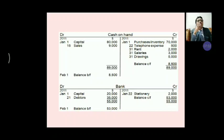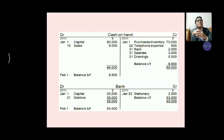Then, on the credit side of cash account: purchase inventory Rs. 70,000, telephone expenses Rs. 500, rent Rs. 2,000, salary Rs. 3,000, drawings Rs. 5,000. The total of the debit side is Rs. 89,000. The expenses on the credit side total Rs. 80,500. The balance on the cash on hand account is Rs. 8,500 cash balance remaining in the business.